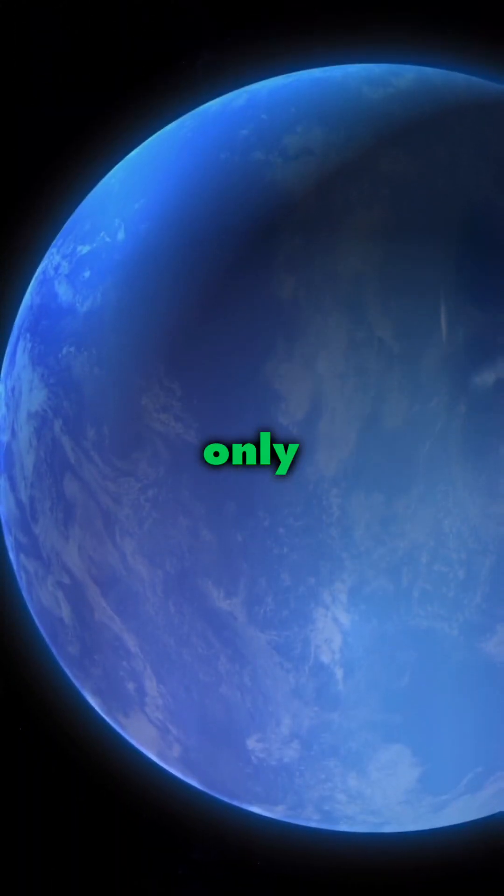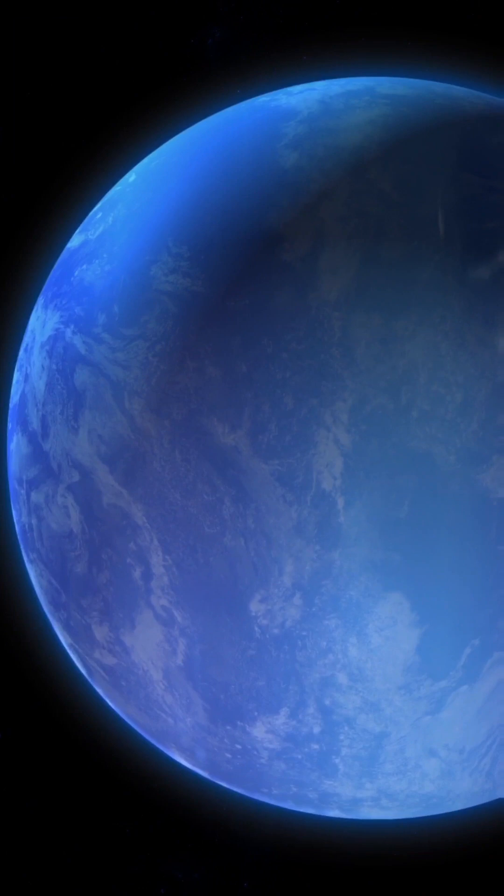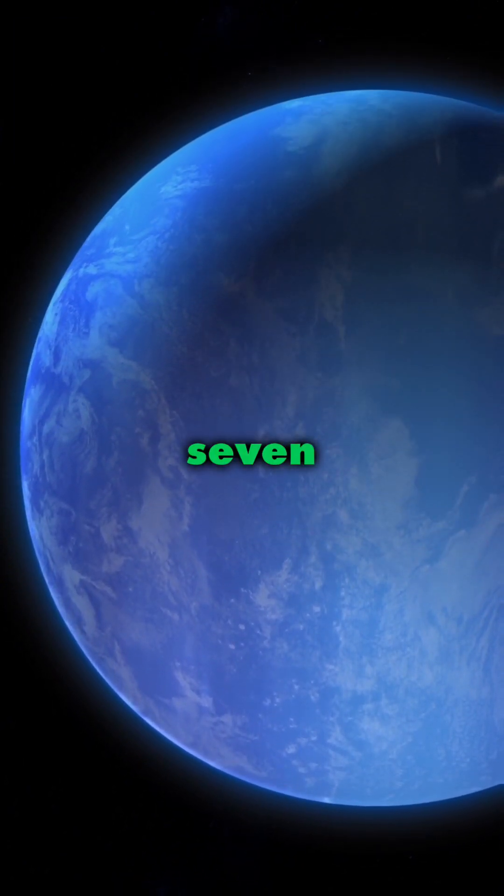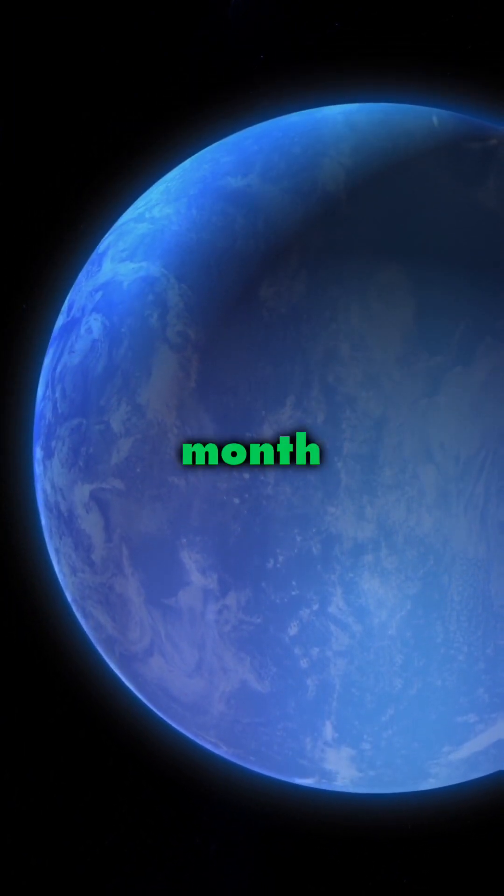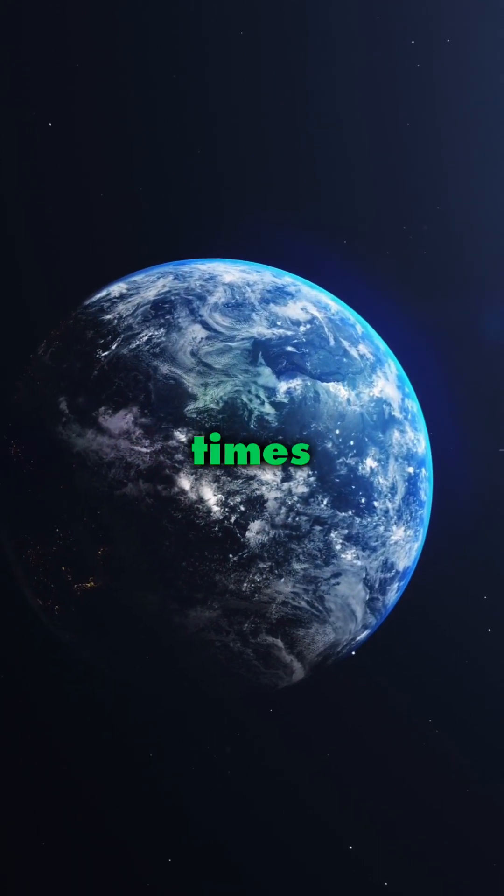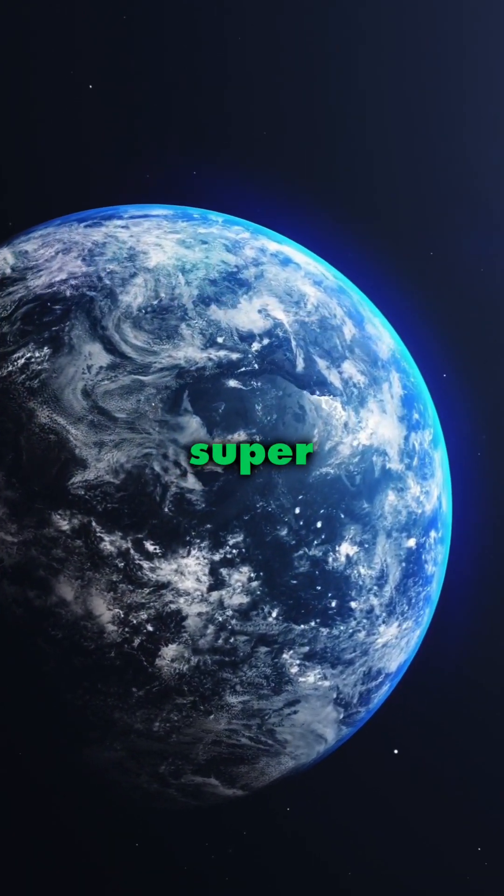Imagine a year lasting only 28 Earth days. That's right, Gliese 667 cc zips around its star in less than a month. What's more fascinating, it's roughly 4.5 times the mass of Earth, making it a super Earth.